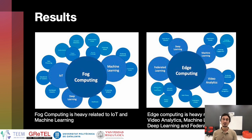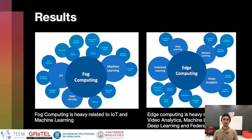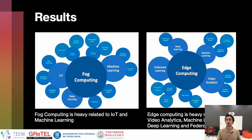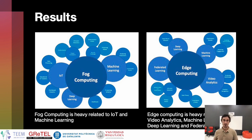We have here two images — one from FOG computing and one from Edge computing — showing the domains the papers are working on. In FOG computing, machine learning and Internet of Things are two domains heavily related to this layer.